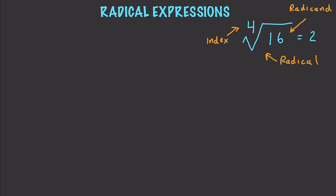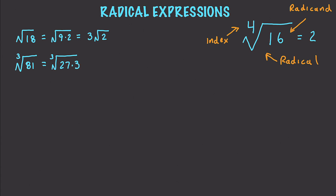Let's simplify radical expressions. When there is no perfect solution, we find the greatest factor that is a perfect square. Starting simple: the square root of 18 can be converted into the square root of 9 times 2. We take the square root of 9 and are left with 3 times the square root of 2. For another example, the cube root of 81 converts to the cube root of 27 times 3. We take the cube root of 27, which is 3, leaving us with 3 times the cube root of 3.